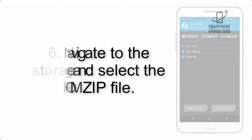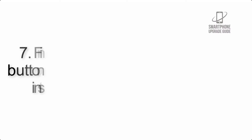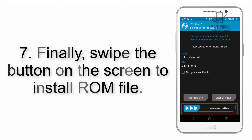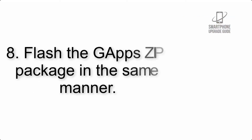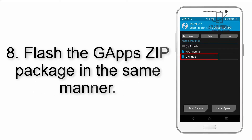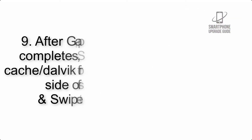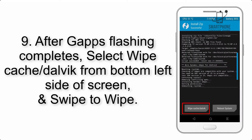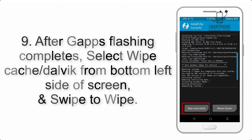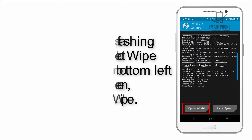Step 6: Navigate to the storage and select the ROM zip file. Step 7: Swipe the button on the screen to install the ROM file. Step 8: Flash the GApps zip package in the same manner. Step 9: After GApps flashing completes, select Wipe Cache and Dalvik from the bottom left side of the screen and swipe to wipe.